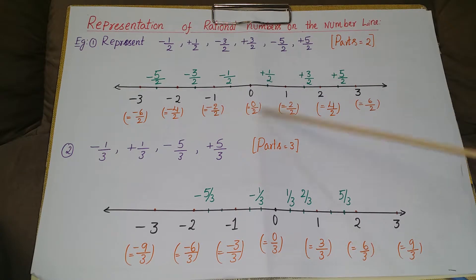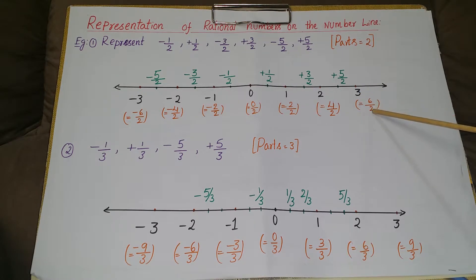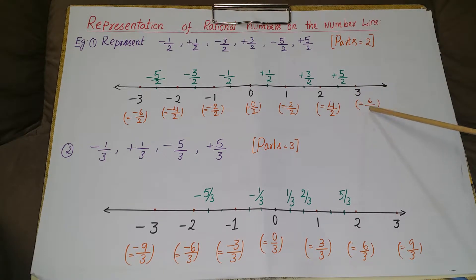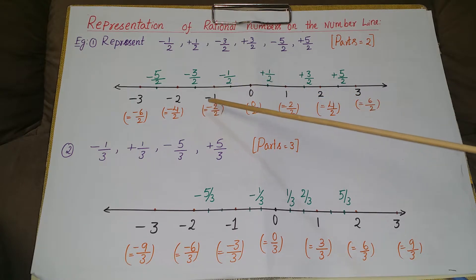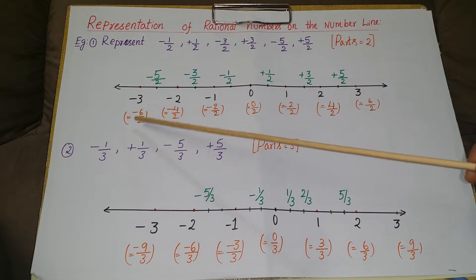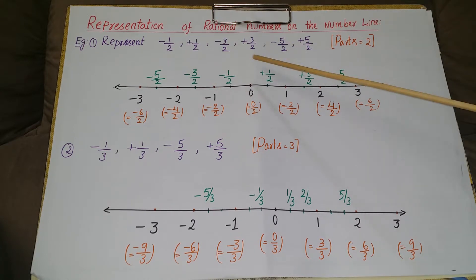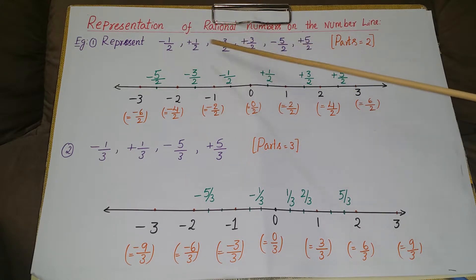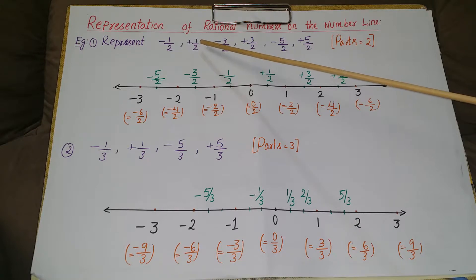If you don't know how to write, say, 6/2, just multiply 3 by the number of parts: 3 times 2 is 6, giving 6/2. Then write the same numbers on the left side as negatives: -2/2, -4/2, and -6/2.